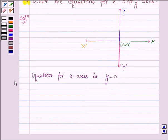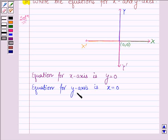Similarly, equation for y-axis is x equals 0. Since y can take all the values, negative also and positive also, and x-coordinate is 0. So the equation for y-axis is x equals 0.